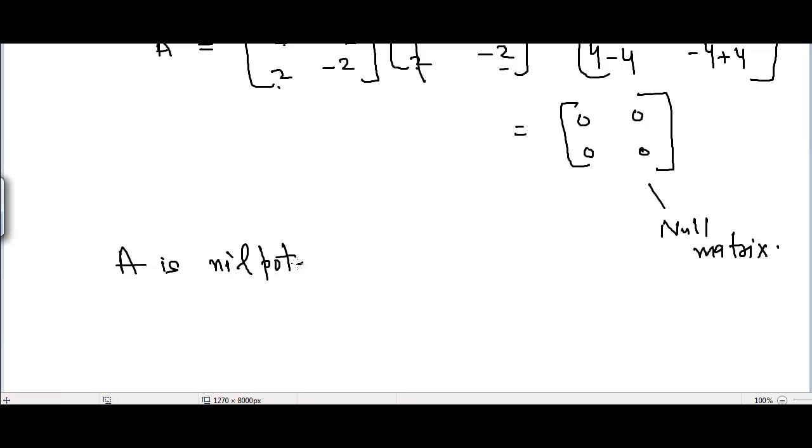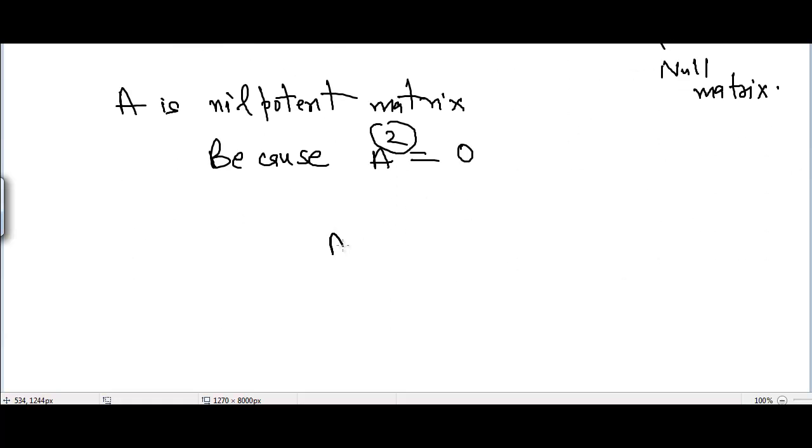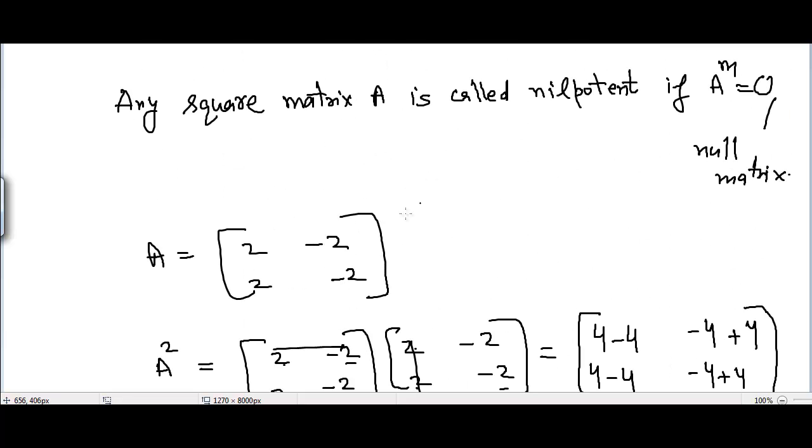According to the example we considered, A^2 = 0, and this 2 is an integer. According to the definition, any square matrix A is nilpotent if A^M = 0, where M is any integer. So this M may or may not equal 2, but according to the example, A^2 = 0, so we have this matrix A nilpotent.